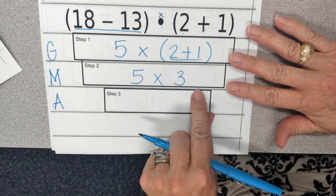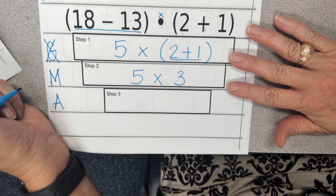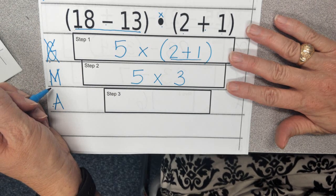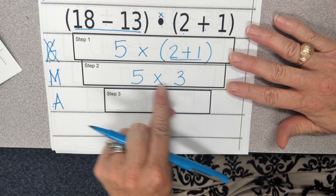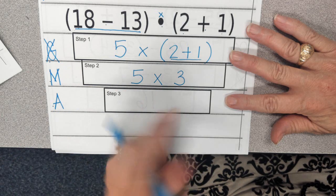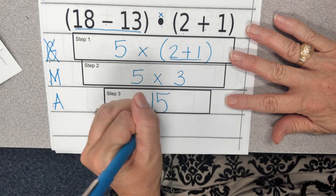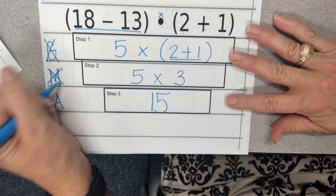So, now when I look at this problem, I'm done with my grouping symbols. I'm looking for multiplicative actions. So, we have 5 times 3, and 5 times 3 is going to give me the answer 15. And that is my final answer. There are no additives after my grouping symbols.